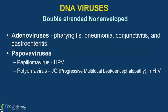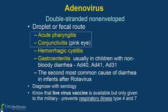Starting with adenoviruses and papovaviruses: adenoviruses cause pharyngitis, pneumonia, conjunctivitis, and gastroenteritis. Under papovaviruses, we have the papillomavirus and the polyomavirus. For the exam, adenovirus causes acute pharyngitis, conjunctivitis (non-purulent, like pink eye), hemorrhagic cystitis, and gastroenteritis usually in children with non-bloody diarrhea — that's adenovirus strains 40, 41, and 31.